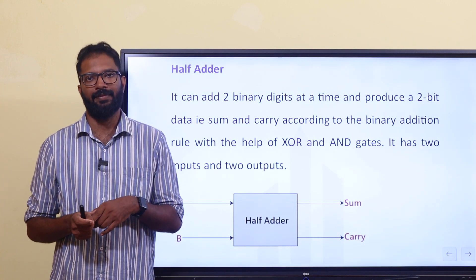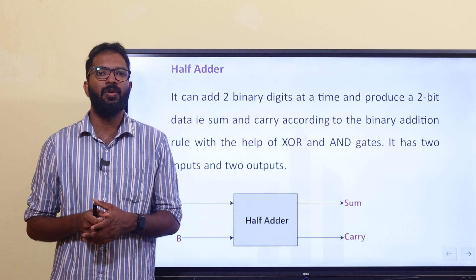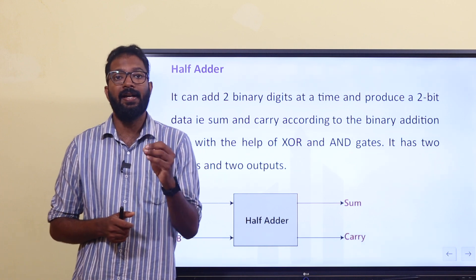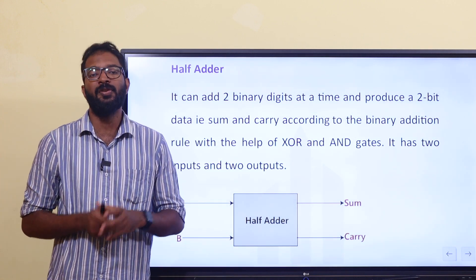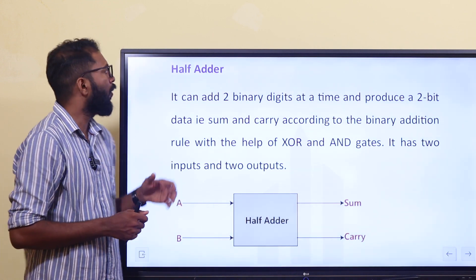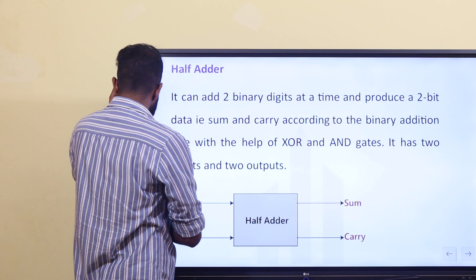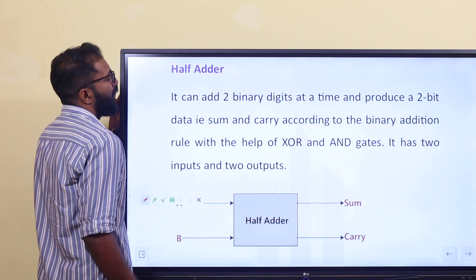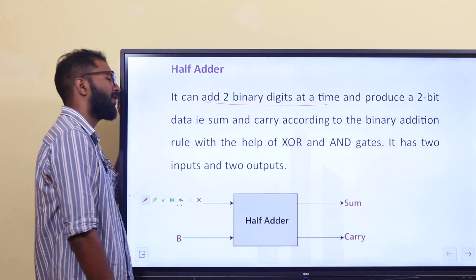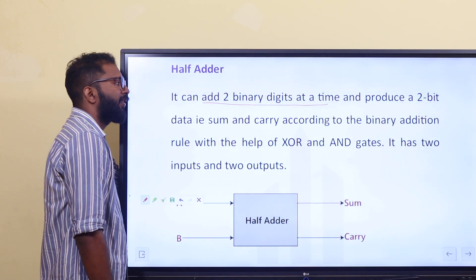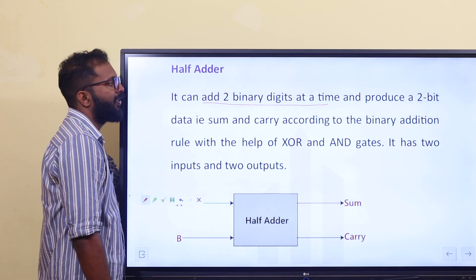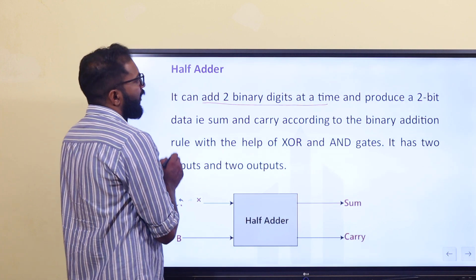What is a half adder? The half adder is used to add a number of bits — 2-bit, 4-bit, 16-bit, and 32-bit. It can add two binary digits at a time, taking 2 bits at a time and producing 2-bit data.